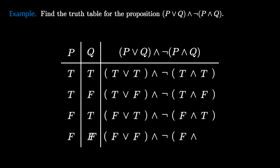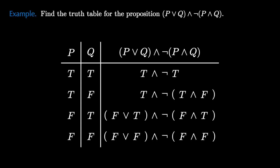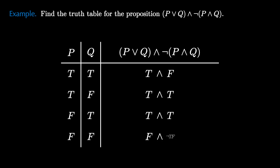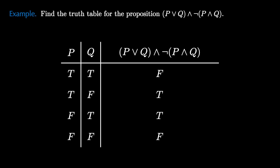For the first row, TRUE OR TRUE is TRUE, and TRUE AND TRUE is also TRUE. In the second row, TRUE OR FALSE is TRUE, and TRUE AND FALSE is FALSE. Then FALSE OR TRUE is TRUE, and FALSE AND TRUE is FALSE. And FALSE OR FALSE is FALSE, and FALSE AND FALSE is FALSE. Then we negate: TRUE becomes FALSE, FALSE becomes TRUE, FALSE becomes TRUE, and FALSE becomes TRUE. Finally, applying the AND connective one more time results in FALSE, TRUE, TRUE, FALSE. This is the truth table for the molecular expression we started with.